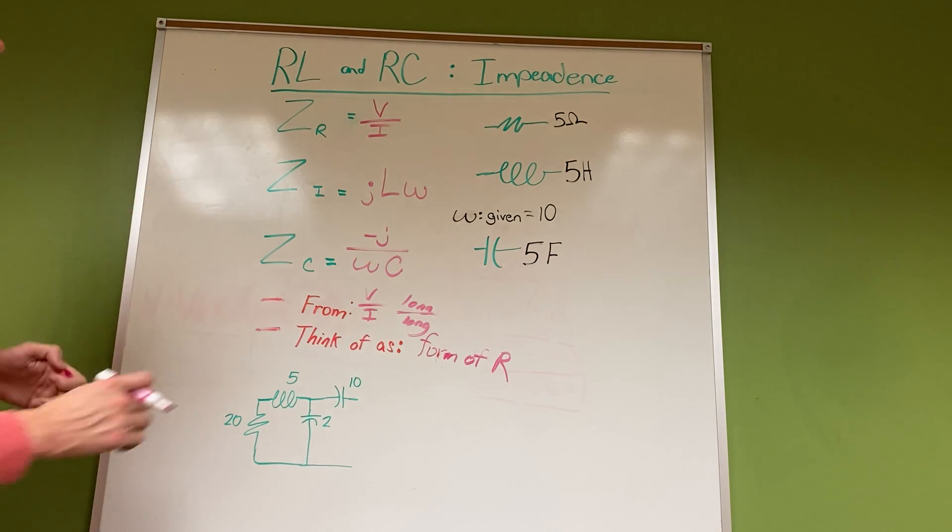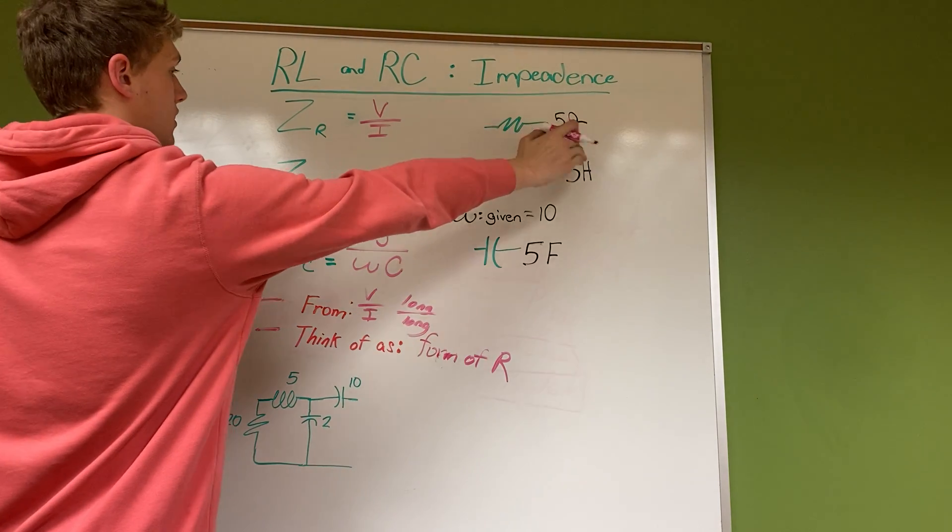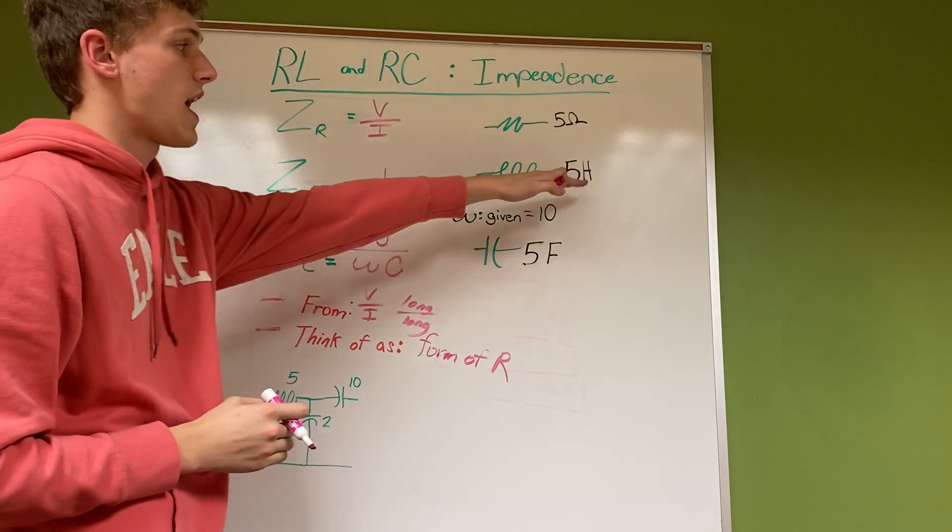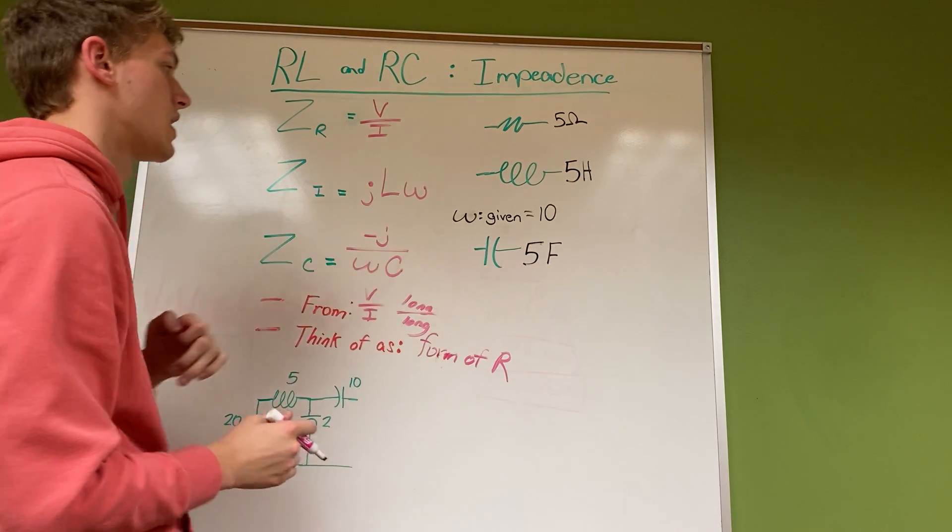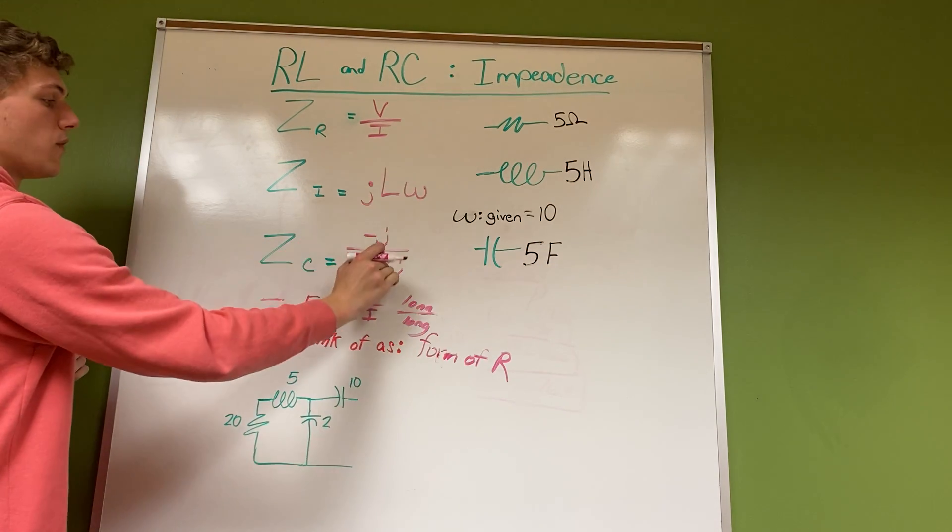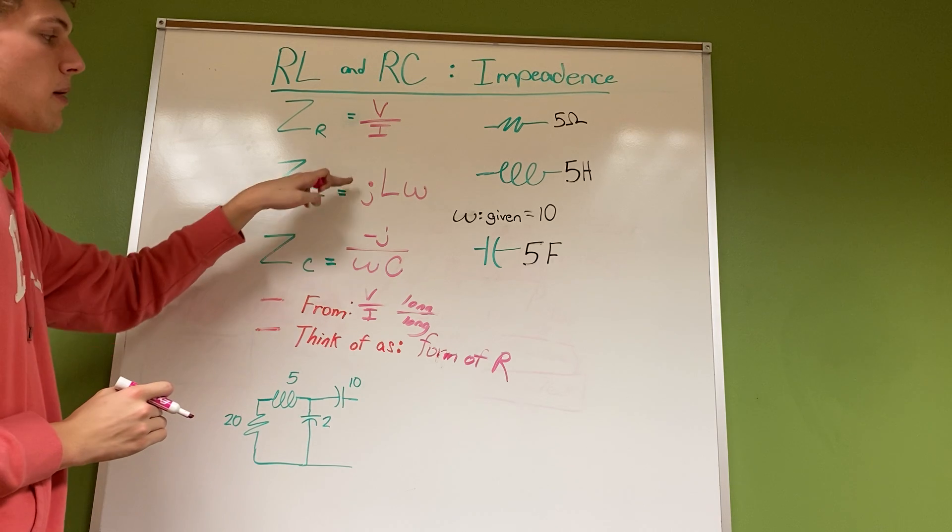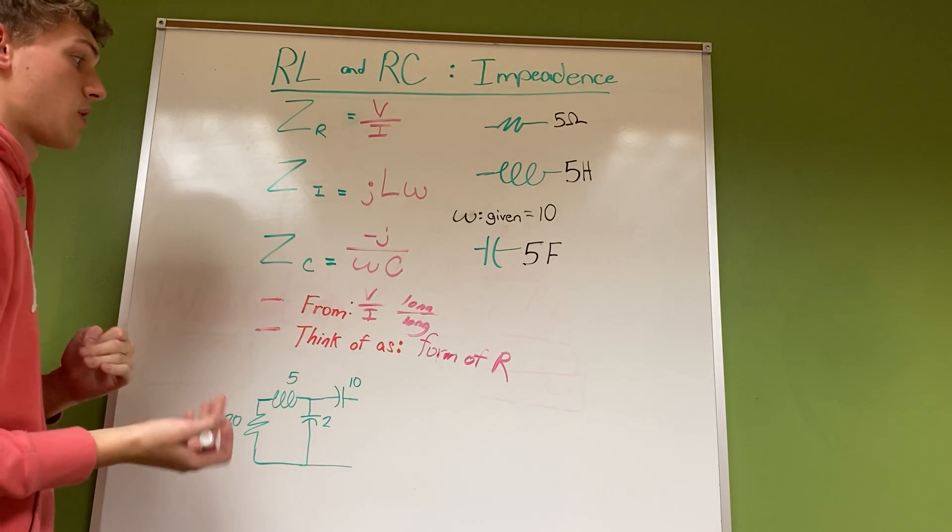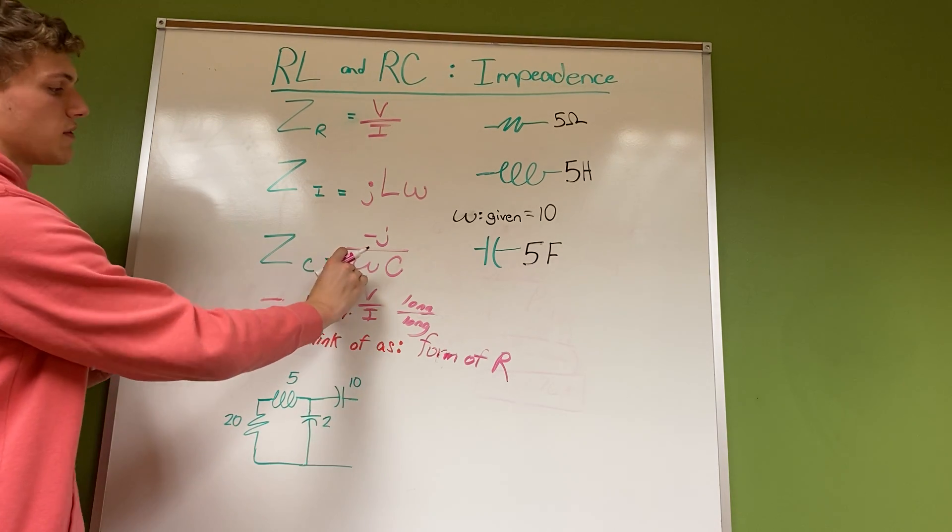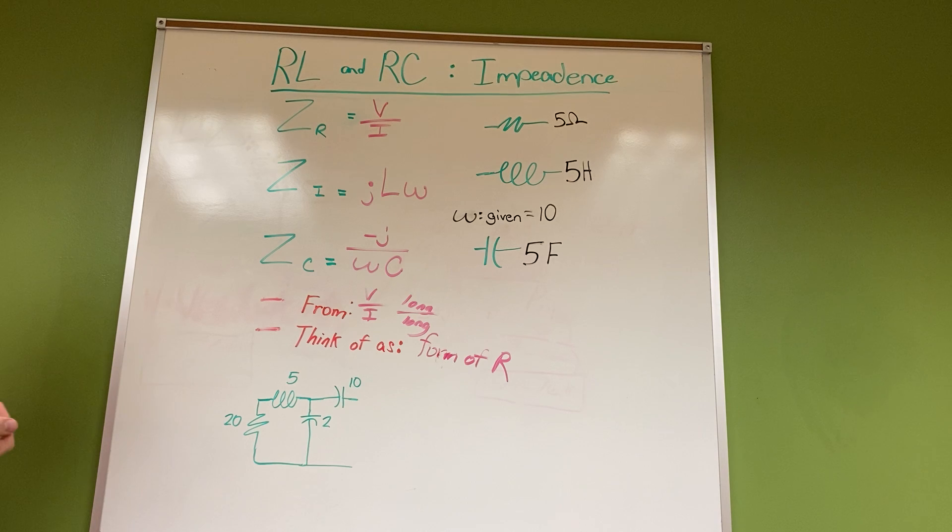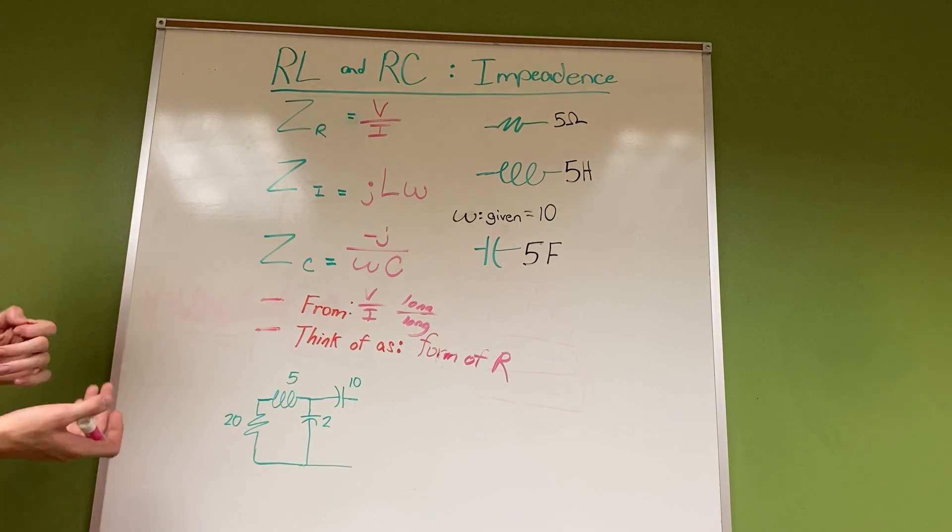The way that you find impedance is you plug in any numbers that you're given, such as henries or farads. You plug those in for your L or your C, apply your j, and you should be given your omega or your frequency somewhere to be able to find that last part of your equation.